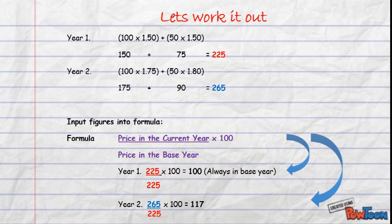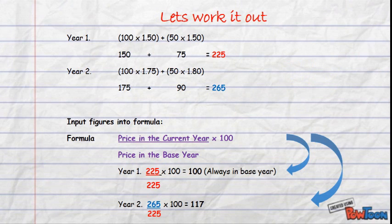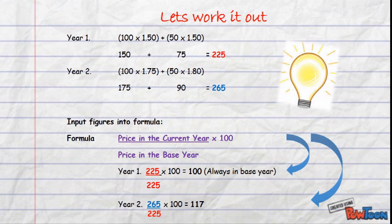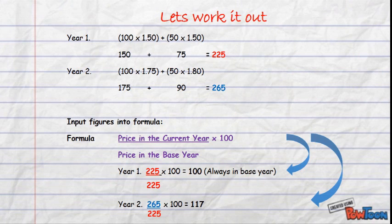This results in 100 litres of milk multiplied by €1.50, plus 50 loaves of bread multiplied by €1.50, providing an answer of 225. We repeat this calculation for year 2: therefore 100 litres of milk priced at €1.75 and 50 loaves of bread priced at €1.80, resulting in a figure of 265. Having calculated the two figures for year 1 as our base year and year 2 to compare, we can now substitute them into the formula. For year 1, the price in the current year is 225 over the price in the base year, which is the same year, 225, multiplied by 100. This results in an answer of 100.